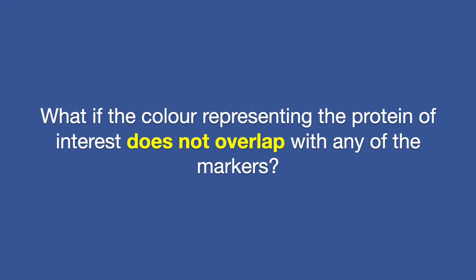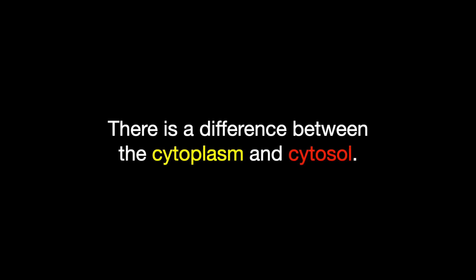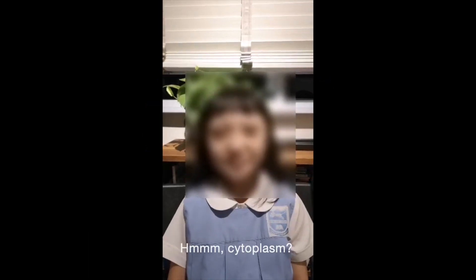I see. What if the color representing the protein of interest does not overlap with any of the markers? Is it found in the cytoplasm? You're partially right. But there's one thing to note. There is a difference between the cytoplasm and cytosol. Do you think that the protein of interest is found in the cytoplasm or cytosol here? Hmm, cytoplasm?